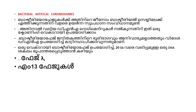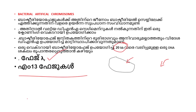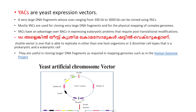This is the bacterial artificial chromosome. Bacterial phages are created in bacterial cells. This is a cloning vector where we use up to 20 kilobases of foreign DNA in bacterial phages. This is an example of bacterial artificial chromosomes.